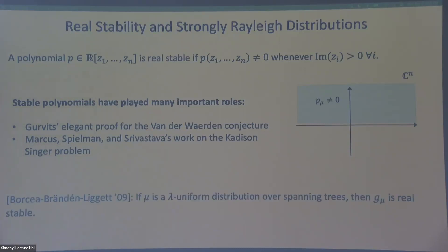And for us, it's useful because Orasanu, Brändén, and Liggett proved, among many other useful things, that if mu is a lambda uniform distribution over spanning trees, then its generating polynomial is real stable. So it has this zero-free region. What does that mean? What means lambda? Yeah, so I'm not going to define it. But I'll tell you that this is the distribution we use in our algorithm for TSP. But it does have a very simple description. So I'll leave it out for now. So this is what allows us to use this link between our distribution and polynomials.